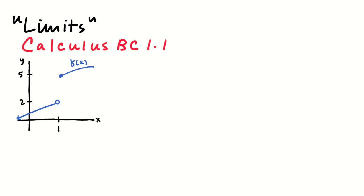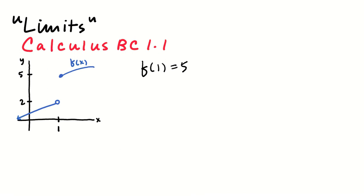The first question I've got for you: as you're looking at this graph of a function f of x, what's the value of f of 1? If you're thinking the value of f of 1 is 5, then you would be correct. f of 1 is equal to 5 because that's where I'm seeing the filled-in circle — that means that's where the graph is, that's the height of the graph at x equals 1.